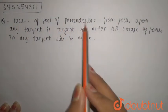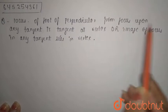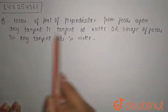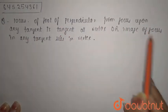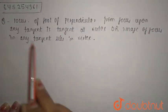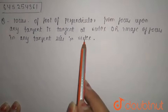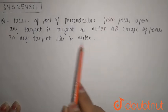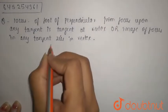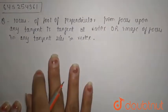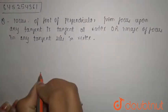The locus of foot of perpendicular from focus upon any tangent is the tangent at vertex. Or, the image of focus in any tangent lies on the vertex. So we need to prove this. First of all, let's make a figure.